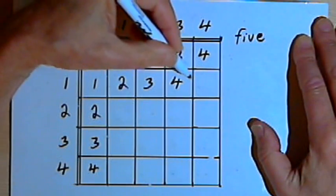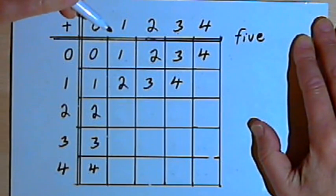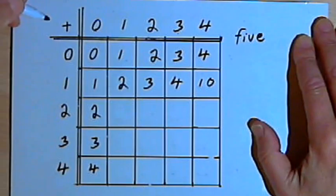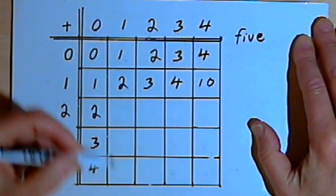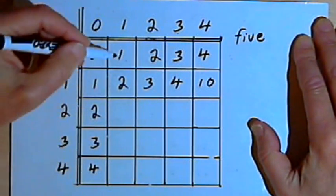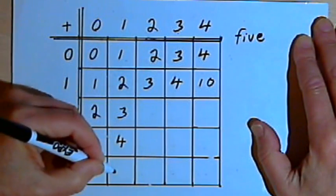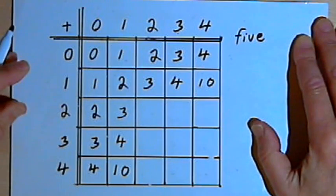And then my next number, remember I have no number 5, no digit for 5 in a base 5 system. So that's going to be 1, 0. And I can fill those numbers in, in the 1's column going down: 1, 2, 3, 4, and 1, 0.